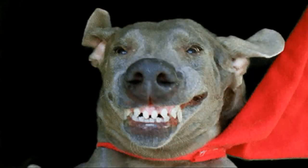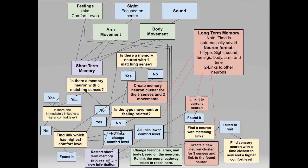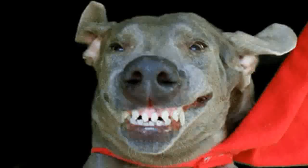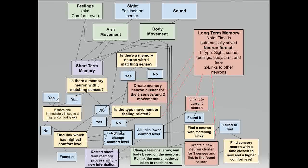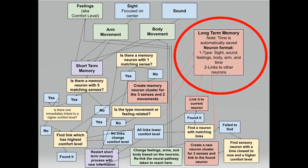So now that you know what the AI would need to do, I will tell you how it thinks. Here is the diagram of how the AI's brain works. Here is the color key. As you can tell, the AI's brain is split into two sections: the short-term and the long-term memory.